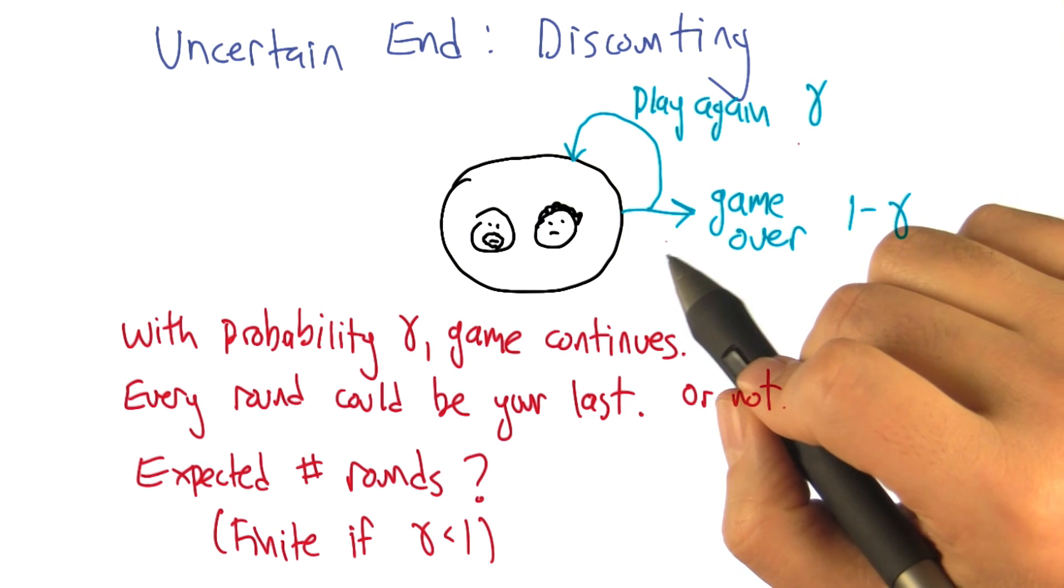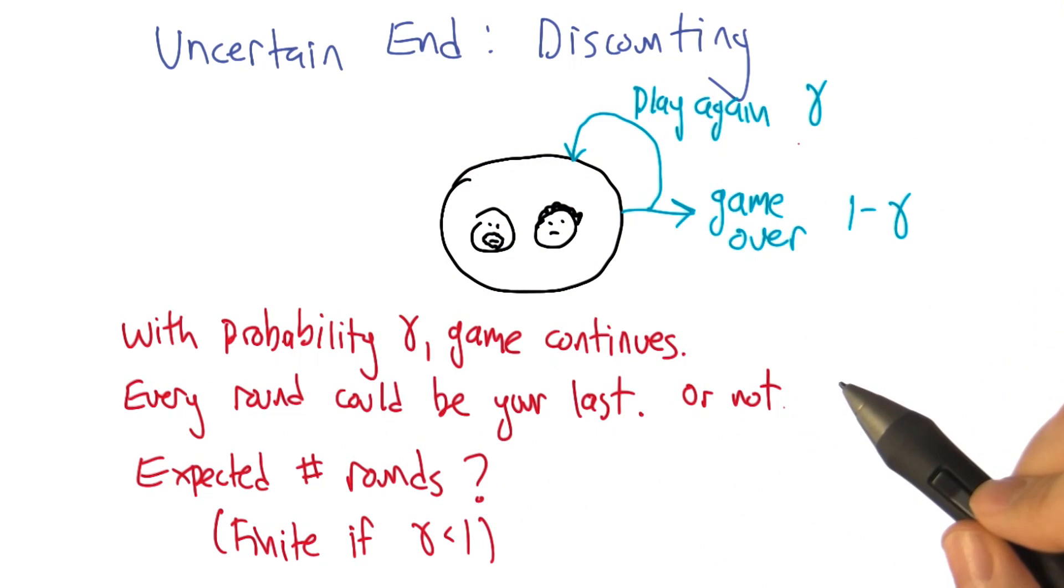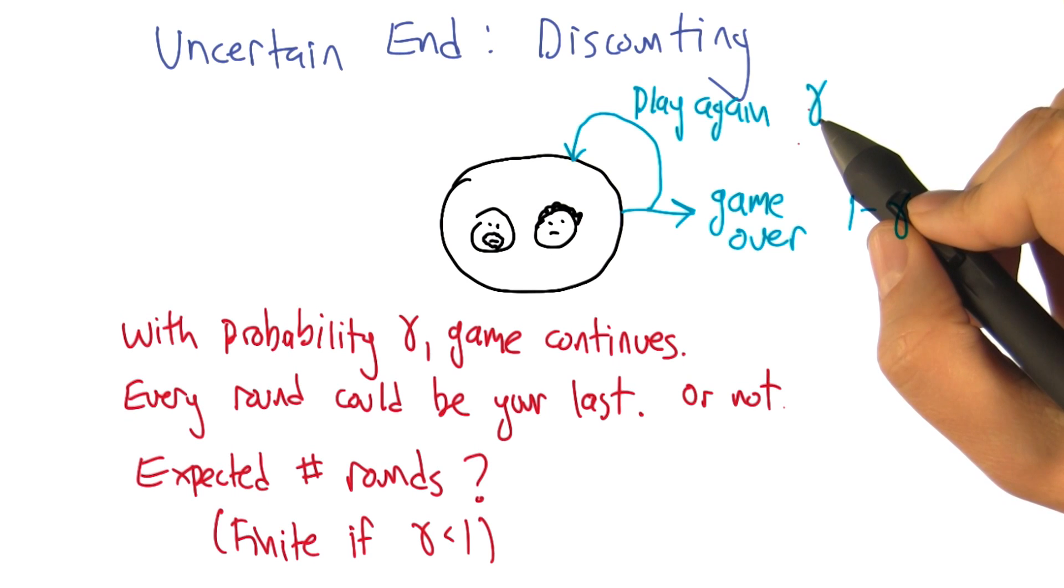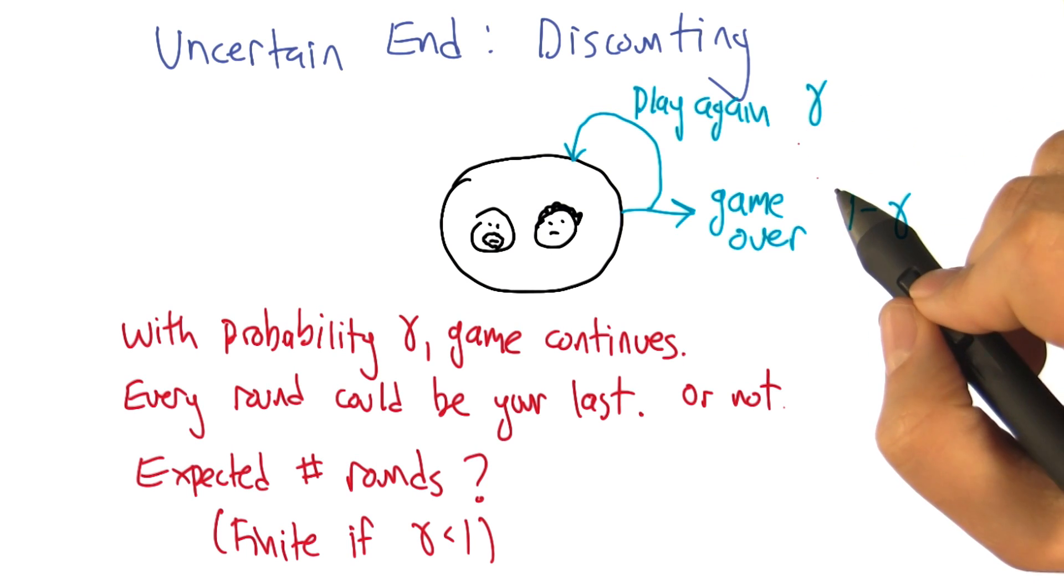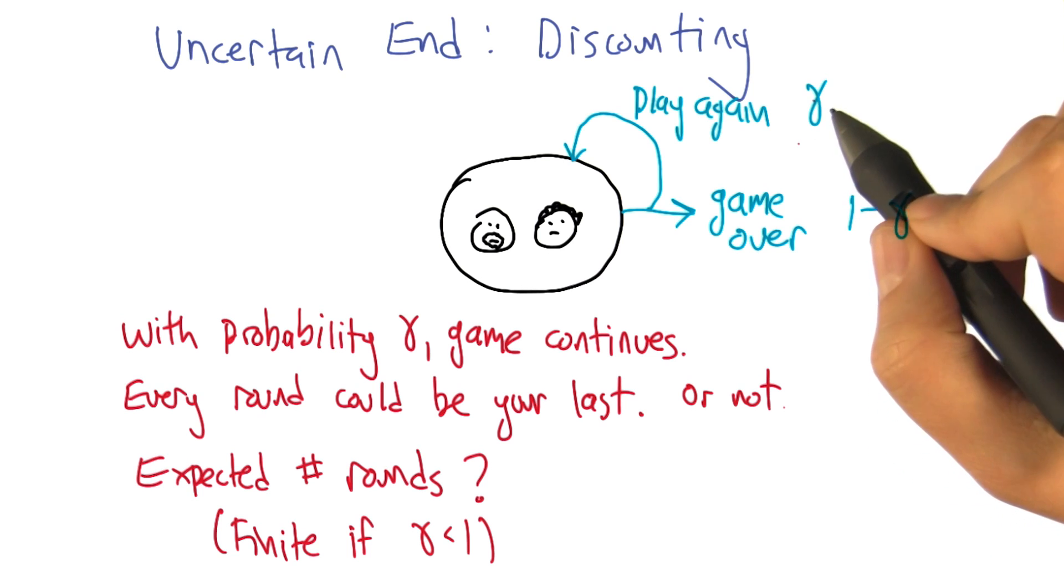I see. So the setup here is with probability gamma, the game continues. Now, notice that I chose gamma here. It's representing a probability here. But in the past, we've used this to represent a discount factor. But that actually is the same thing, right?